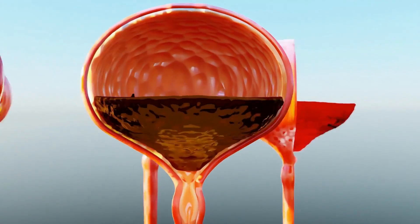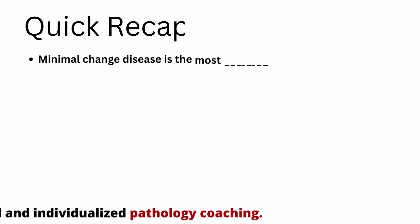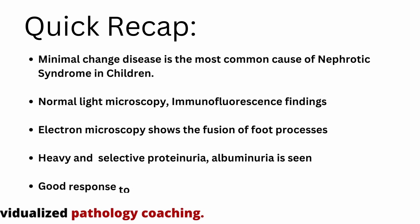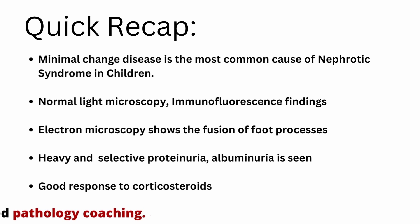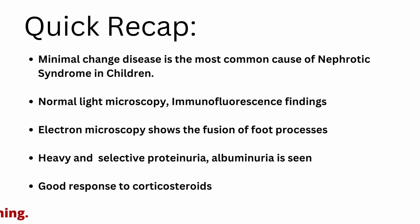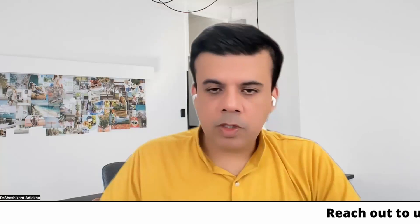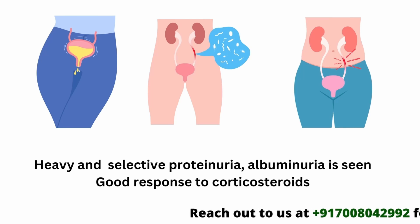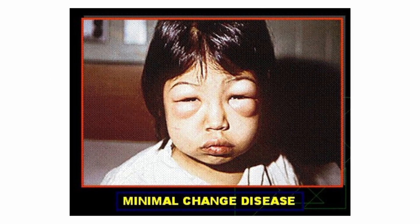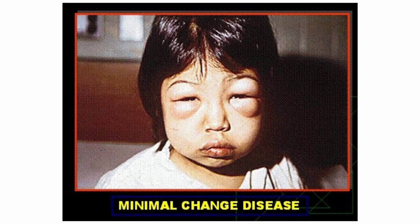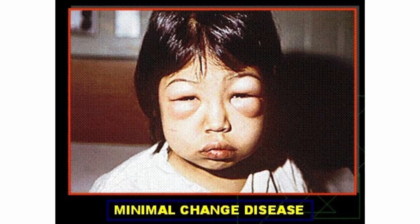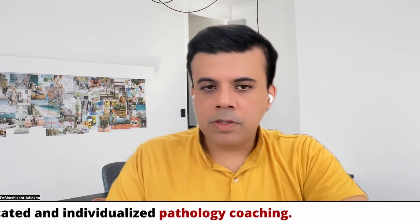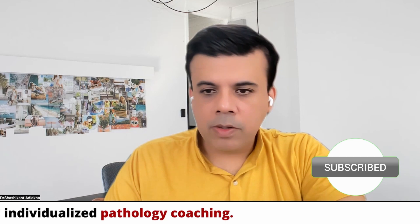To summarize: minimal change disease is the most common cause of nephrotic syndrome in children. Light microscopic and immunofluorescence findings are absolutely normal. Only on electron microscopy will we see the flattening and fusion of the podocyte foot processes. Treatment is with corticosteroids, and the patient shows a good response. There is massive proteinuria with highly selective albuminuria, and no hypertension or hematuria is seen in these patients.